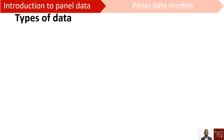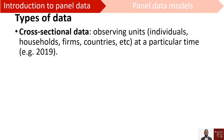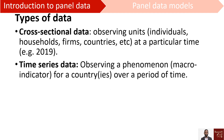We have basically three types of data. First, we have cross-sectional data. This is where we observe individuals, households, or any kind of unit we want to study at a particular point in time — say we observe a company or companies in 2019 alone. So this is cross-sectional data.